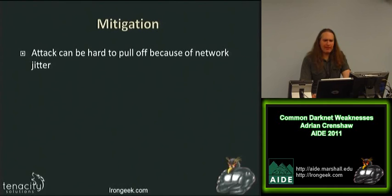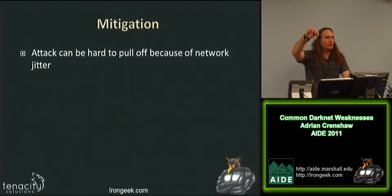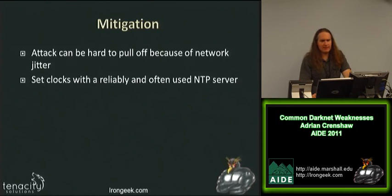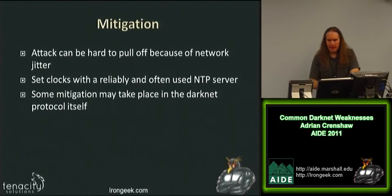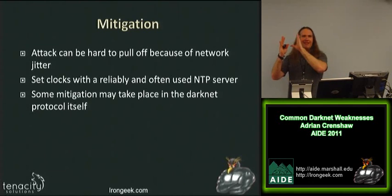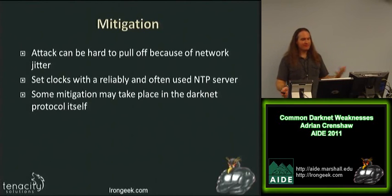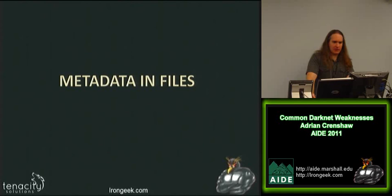Mitigations for clock-based attacks: depending on how far off the clock is, this attack can be fairly hard to pull off because there's a fair amount of jitter in all these networks from the multiple hops. Unless the clock is severely off, it's probably not going to be a big issue. Having the clock set to a reliable NTP server would help. Some mitigations can take place in the dark net protocol itself — I2P has certain timing things inherent to it and makes sure people aren't too far off from each other. However, that internal timestamp doesn't reflect the time of the hosted machine, so the application layer can still reveal identity.